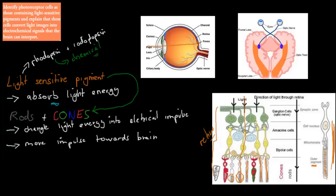Once light energy has been absorbed, the rods and cones change the light energy into an electrical impulse — they convert light energy into electrical energy. The reason for this is that rods and cones are neurons, which are nerve cells, and they can't send light. They can only send electrical impulses. So after the light-sensitive pigments detect the light, the rods and cones change it into electrical impulses and send it back out towards the brain.